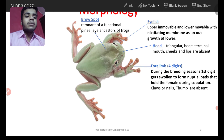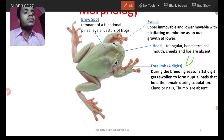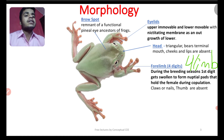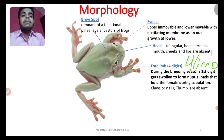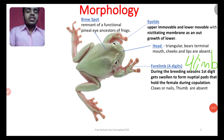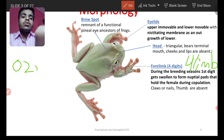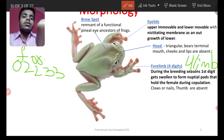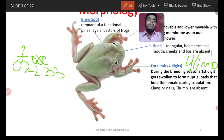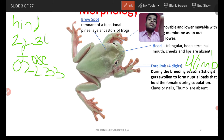Now the forelimbs: the forelimb has 4 digits — 4 fingers only. The digital configuration of the forelimb is 0-2-2-3-3. For the hindlimb, there are 5 digits, and the digital configuration is 2-2-3-4-3. Remember these two digital configurations for forelimb and hindlimb.